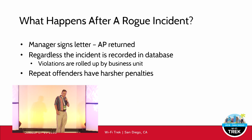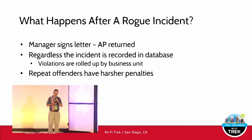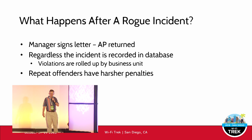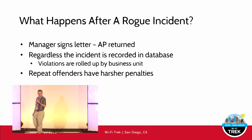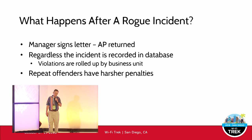After a rogue incident, a manager signs a letter to get the AP returned — or not. Some managers look at the letter and decide their employee shouldn't get the access point back, so we have a small collection of confiscated access points. Regardless of whether they sign the letter, the information is uploaded to the violator database, which can be used to generate different types of actions. Repeat offenders face harsher penalties.